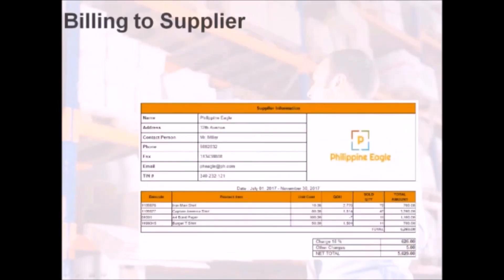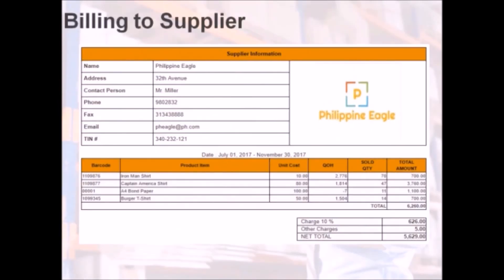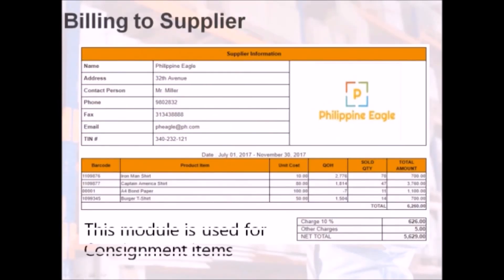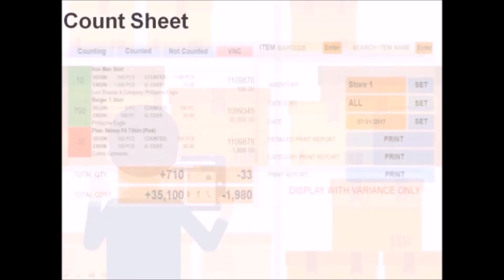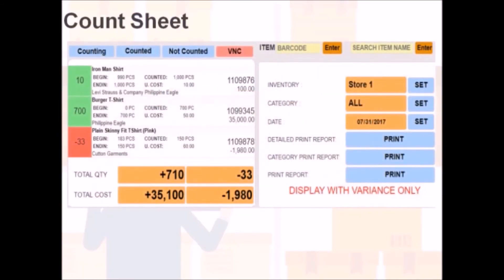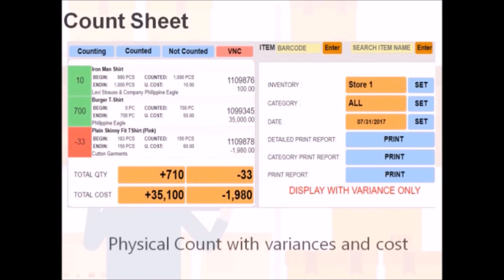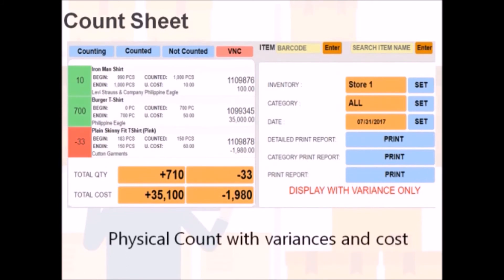Regarding consignment items, here's an example of the billing report generated. The count sheet displays items counted and not yet counted. More details are shown as you count, including variances as well as cost.